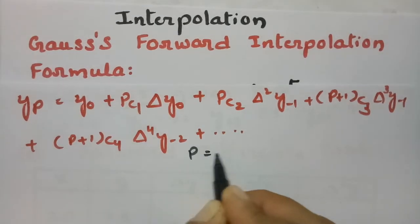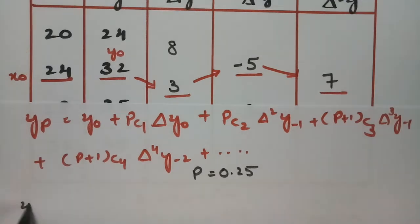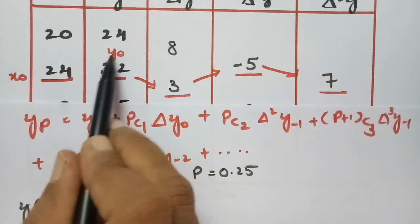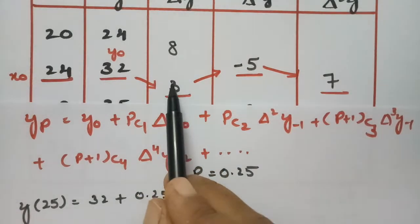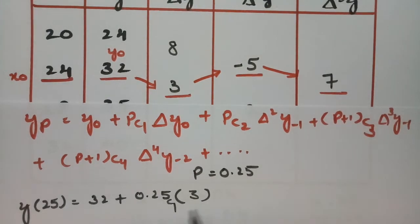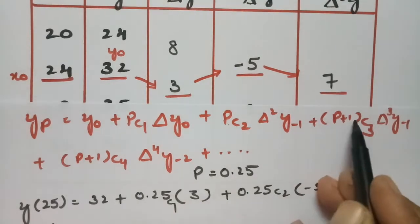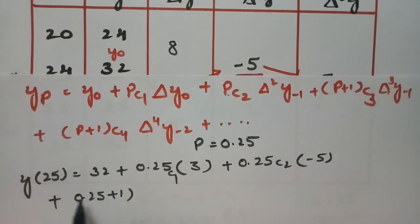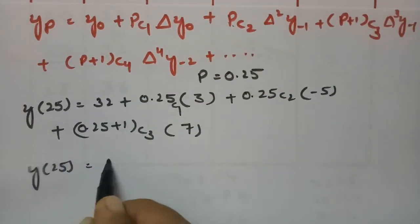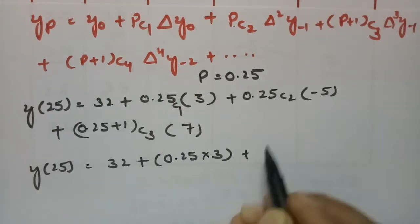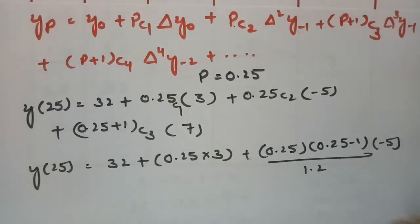Our p value is 0.25. We now substitute the values. y at 25 equals y naught — which is 32 — plus 0.25 times Δy naught, which is 3; plus 0.25·C2 times the second difference, which is minus 5; plus 1.25·C3 times the third difference after y₋₁, which is 7.